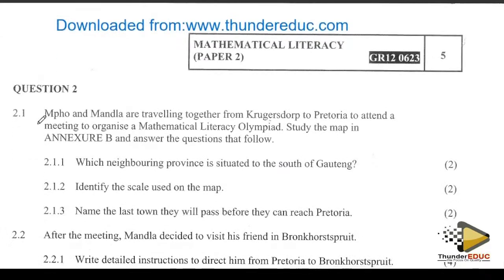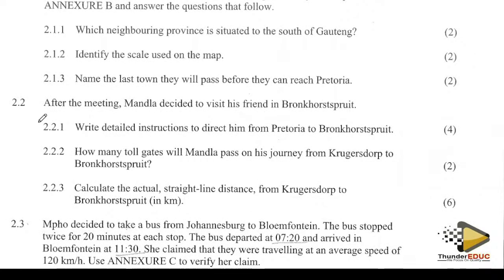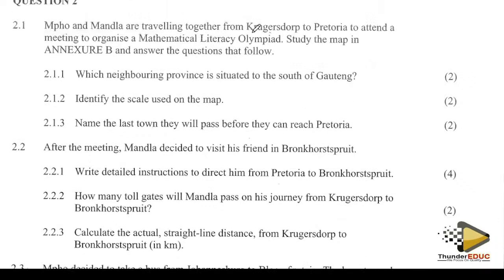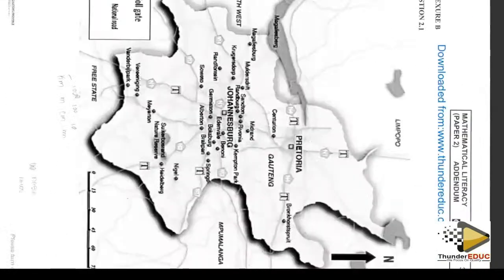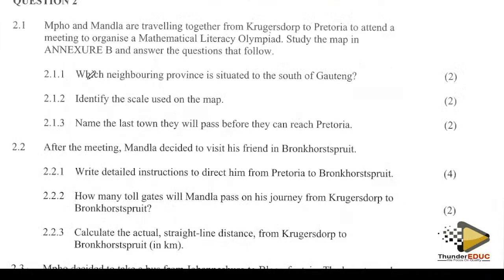Question number two: Mpo and Mantla are travelling together from Kruger's Dorp to Pretoria to attend a meeting to organise a Mathematical Literacy Olympiad. Study the map on annexure B. Which neighbouring province is situated to the south of Gauteng?